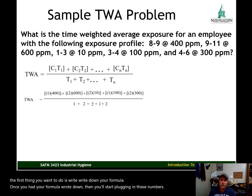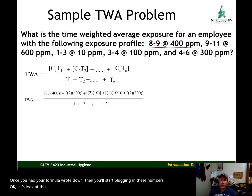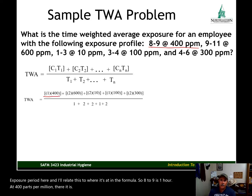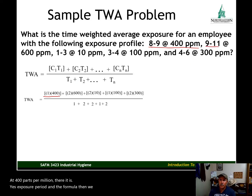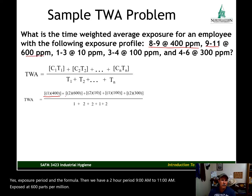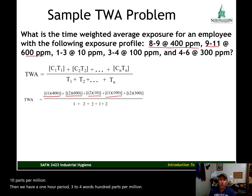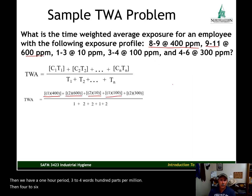8 to 9 is 1 hour at 400 parts per million — there it is in the formula. Then we have a 2-hour period, 9 a.m. to 11 a.m., exposed at 600 parts per million. Then a 2-hour period, 1 to 3, where it's only 10 parts per million. Then a 1-hour period, 3 to 4, where it's 100 parts per million. Then 4 to 6, a 2-hour period at 300 parts per million.